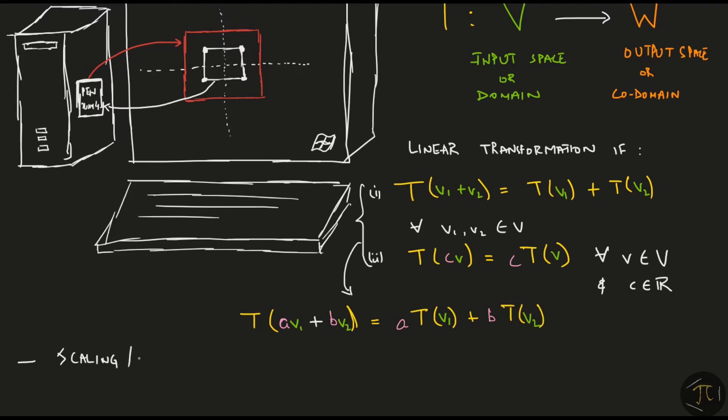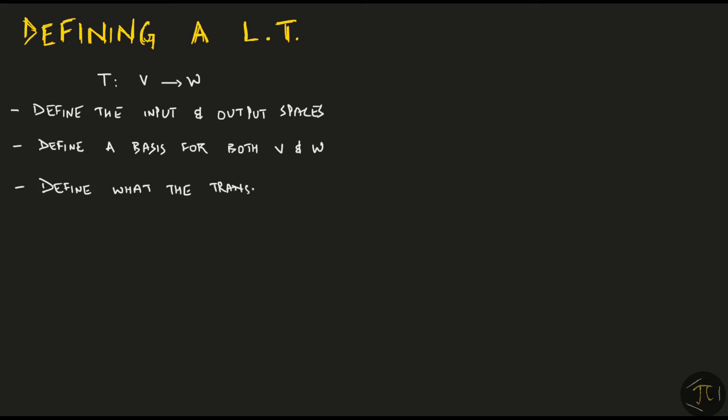The process of scaling or stretching of a Euclidean space is a linear transformation. The corner point is mapped to another point, and so on. We are essentially mapping vectors from R² to R² itself. Let's look at what it takes for defining a linear transformation. First, we must define the input and output spaces. Next, we define a basis for both V and W. And then we define what the transformation does to each input basis vector.